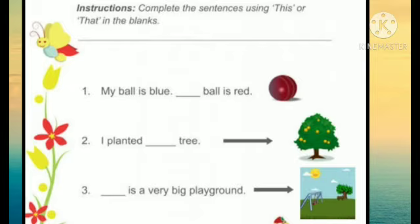The first sentence is, my ball is blue, dash ball is red. You can see here that the ball is near. So we use this. This ball is red.